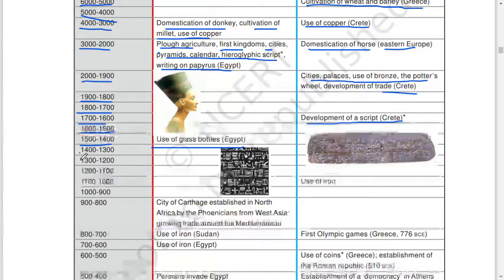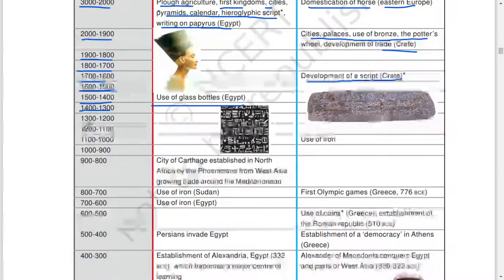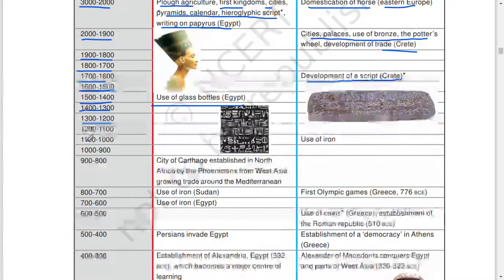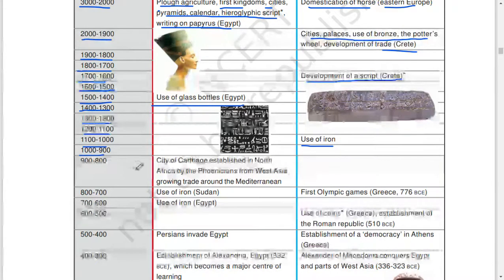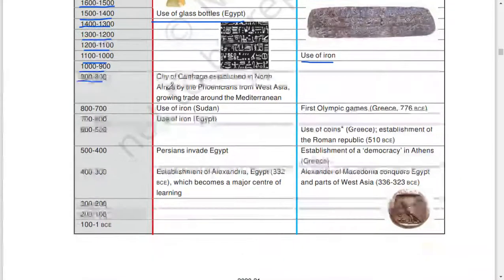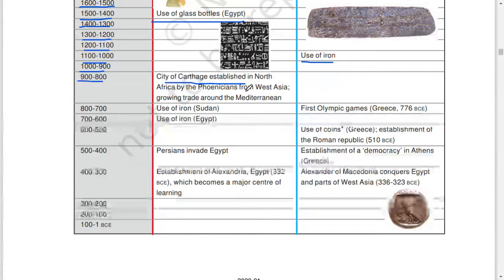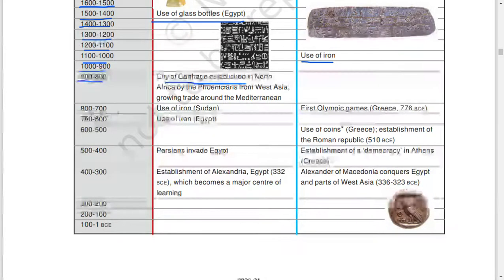1600 to 1500, 1500 to 1400: use of glass bottles, Egypt. 1400 to 1300, 1300 to 1200, 1200 to 1100, 1100 to 1000: use of iron. 1000 to 900, 900 to 800: city of Carthage established in North Africa by Phoenicians from West Asia, growing trade around the Mediterranean.